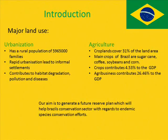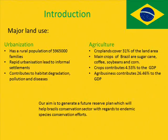In agriculture, the croplands cover a total of 31% of Brazil's land cover. The main crops of Brazil are sugar cane and coffee. Crops contribute 4.5% to the GDP, whereas agribusiness contributes 26.4% to the GDP, meaning the agriculture sector contributes a total of 30.1% to the GDP.